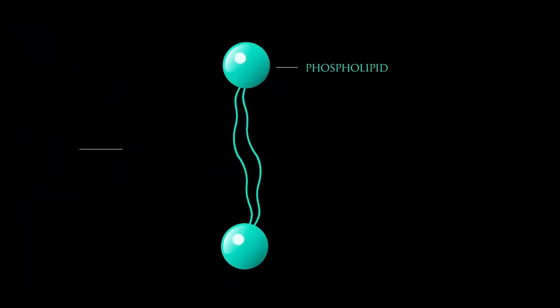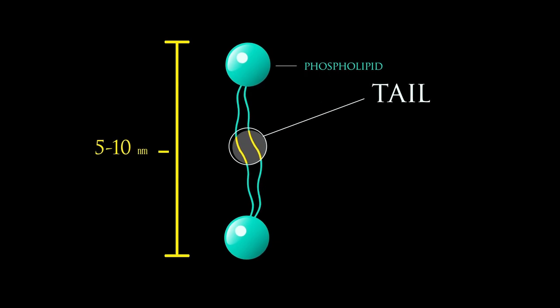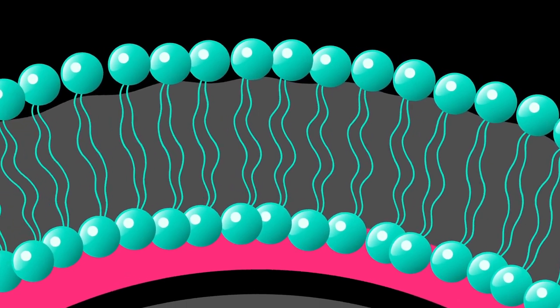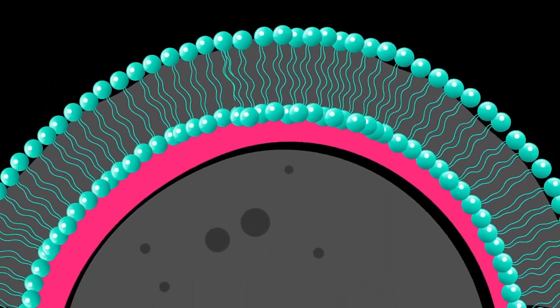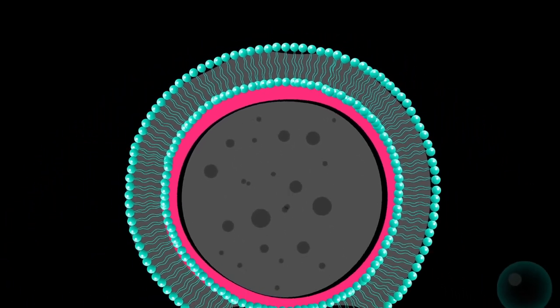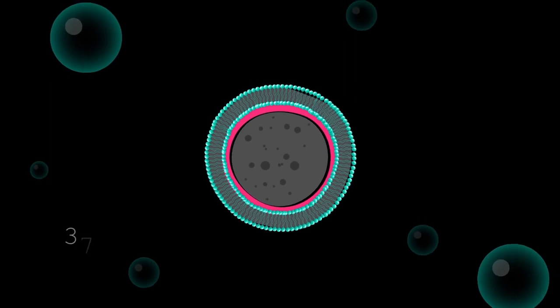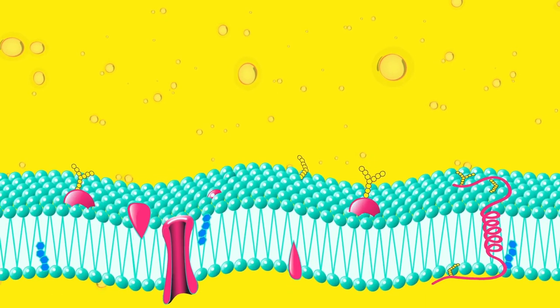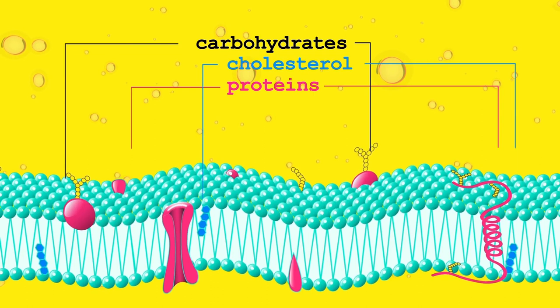They pair up tail to tail in two-layer sheets just 5 to 10 nanometers thick that extend all around the cell. The heads point in towards the cytoplasm and out towards the watery fluid external to the cell, with the lipid tails sandwiched in between. This bilayer, which at body temperature has the consistency of vegetable oil, is studded with other types of molecules including proteins, carbohydrates, and cholesterol.